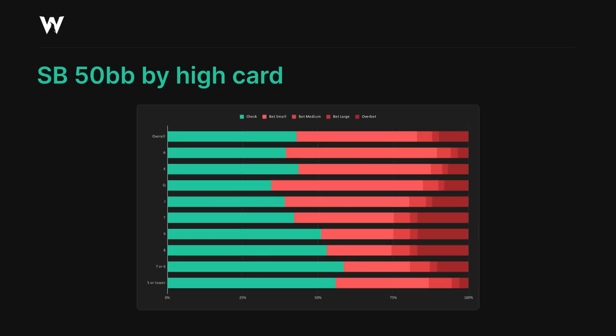In fact, queen high boards are the best ones, which is perhaps a little surprising, but makes sense when we consider that the offsuit queen-x hands will often be folded by the big blind to the preflop raise, while the offsuit king-x and ace-x hands will mostly call or 3-bet.